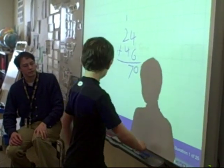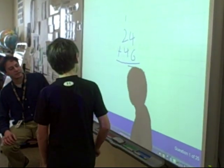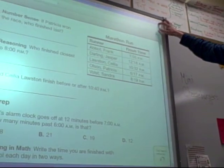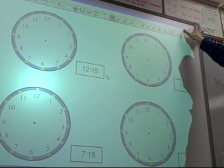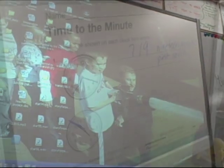Smart Boards are a new tool that allows students and teachers to interact with a white board. The touch screen board is connected to a computer through an LCD projector, so that a teacher can use his finger like a mouse to change the display.